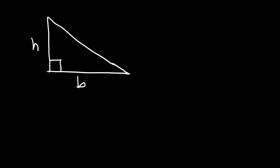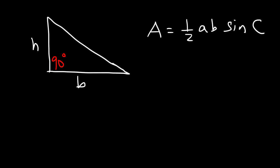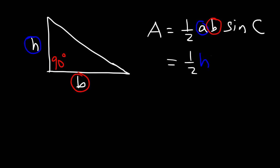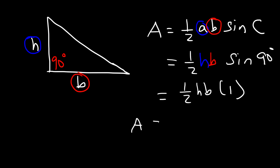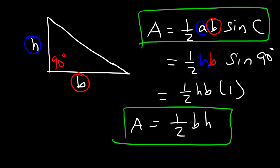Now let's say if we have a right triangle where this is the base, this is the height, and the included angle is 90 degrees. Starting with the same formula — one-half A times B times sine of C — we can let A be the height and B be the base. Then we have sine of 90 degrees. Sine of 90 is 1, so therefore you get the area of a right triangle, which is one-half base times height. This equation comes directly from the general formula — sine of 90 is simply 1. But if the angle is anything different, then you want to use the general equation.